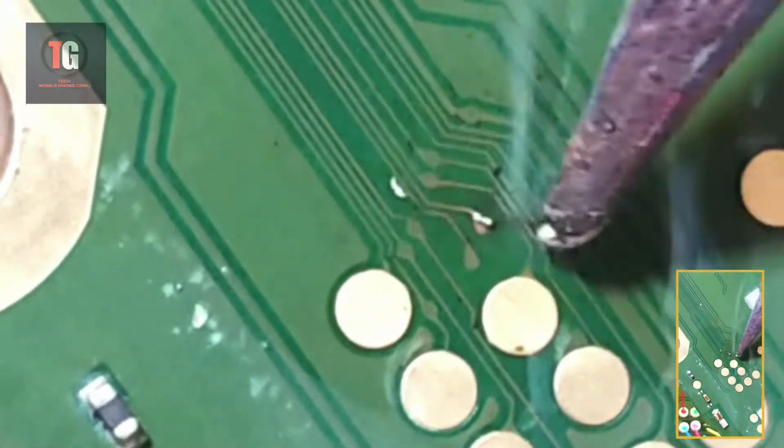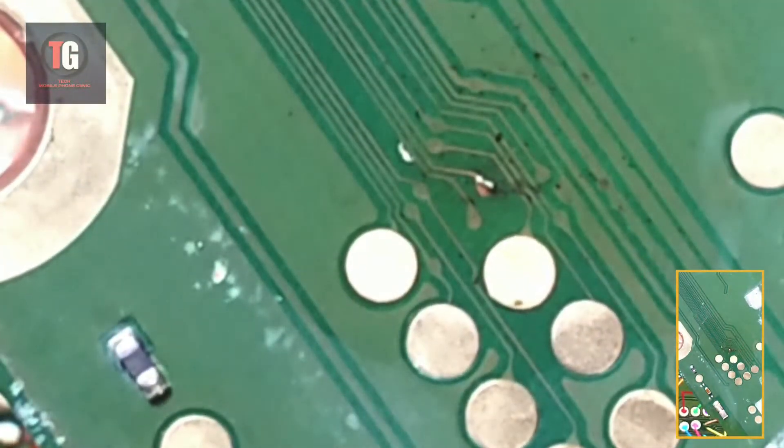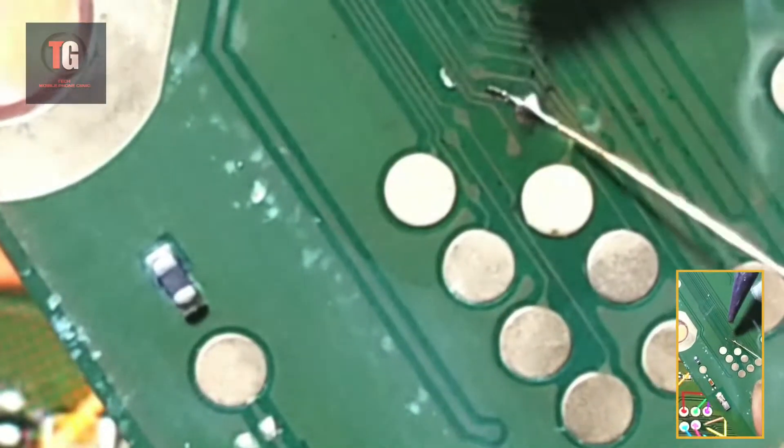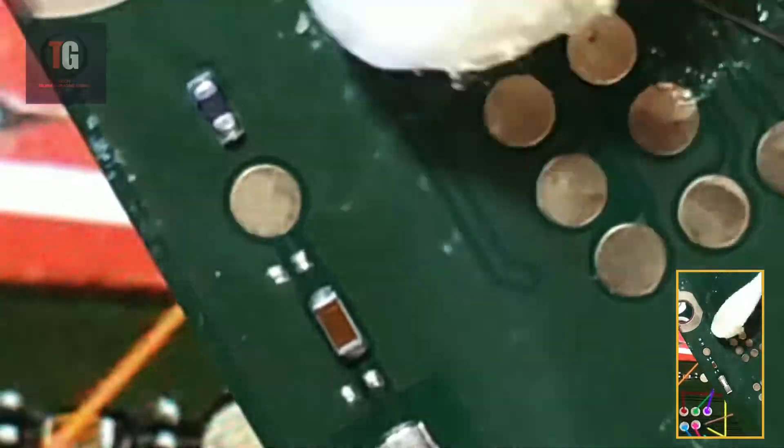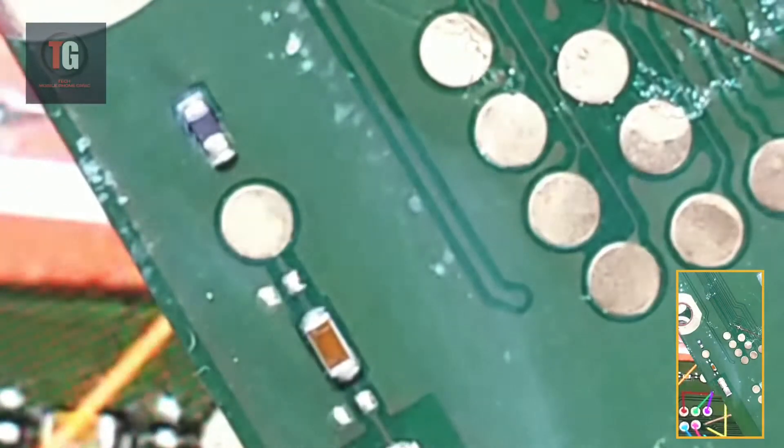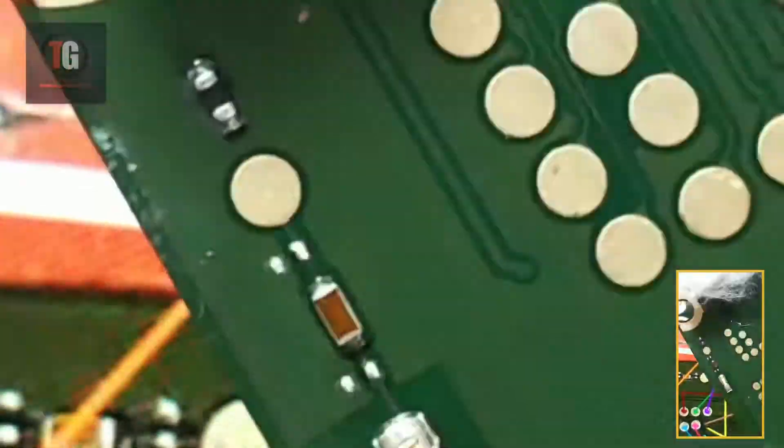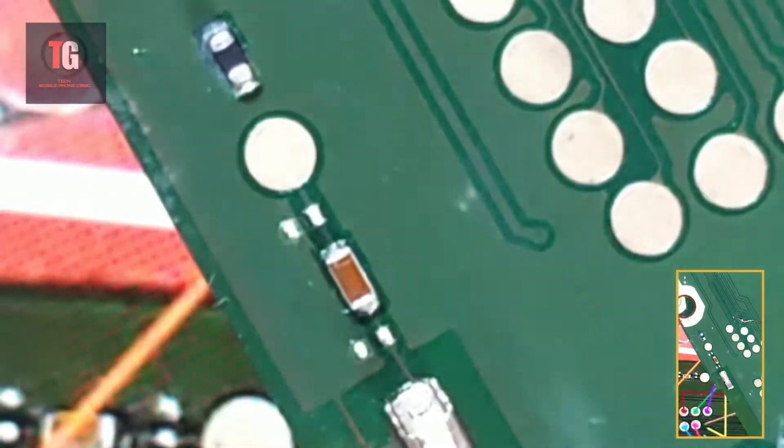Usage can also occur, wear and tear can occur. Once wear and tear occurs on the board, definitely the tracks are going to break down. So for you to solve the issue, you just have to run a jumper wire in order to solve the problem.